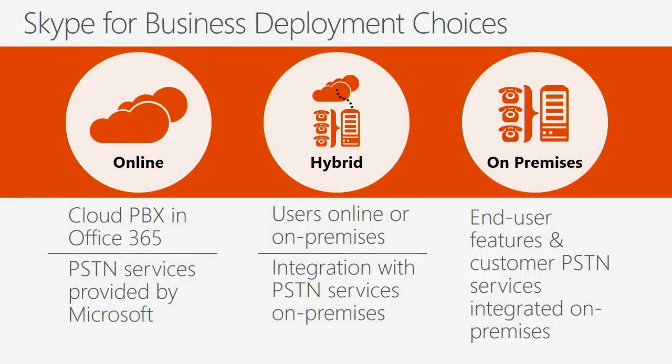There are two choices for deployment. You can either go into Skype for Business Online — you have a tenant, you have Skype for Business Online in the tenant, and you start consuming it as a service — or you can deploy Skype for Business as a server, which can live on-premise in your data center or outsourced to a service provider like Spark as a hosted service. These are the only two options. Hybrid is a configuration — it's when you connect those two together and say there are benefits to connecting my on-premise and online, and you start using that third-way configuration.